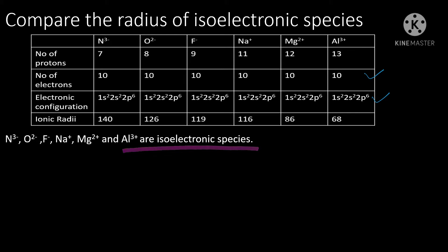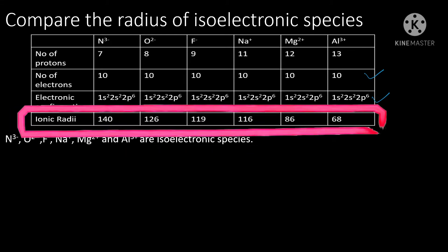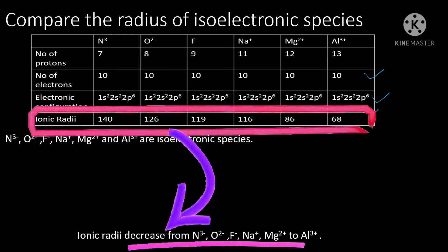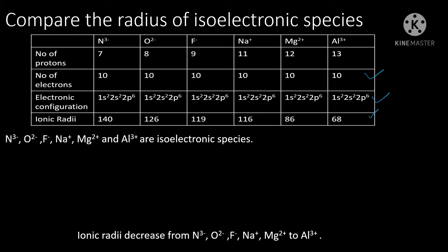We can see from the table that the ionic radii decrease from nitrite ion, oxide ion, fluoride ion, sodium ion, magnesium ion, to aluminum ion. Why? For isoelectronic species, they all have the same number of electrons, so their shielding effect is expected to be almost constant.